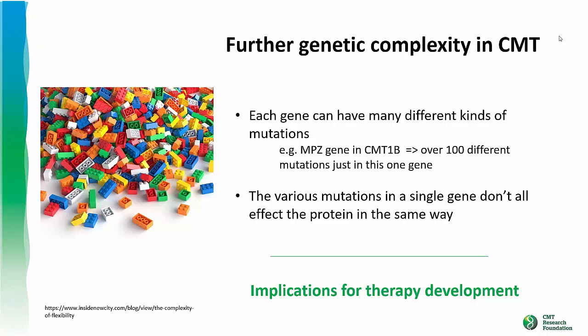Even further genetic complexity exists beyond just having multiple genes or subtypes of CMT. Even within one specific gene there can be many different kinds of mutations. Going back to the recipe analogy, the typo in the recipe could be in the amount of butter, sugar, or flour — these would affect the downstream cake in different ways. The same is true for mutations in a single gene: they affect the protein in different ways, for example loss of function versus toxic gain of function. The type of change in the protein has implications for treating CMT, as loss of function has to be treated differently than toxic gain of function.